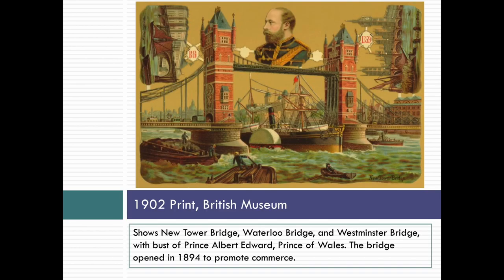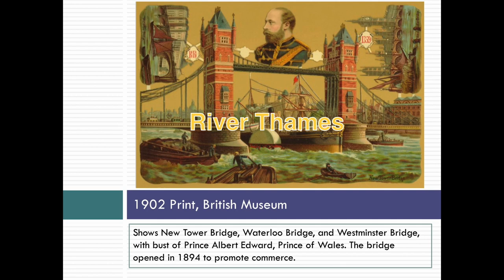Here, from a print in 1902, it shows the Tower Bridge, Waterloo Bridge, and Westminster Bridge — three bridges across the River Thames (pronounced 'Temz'). The bridges were opened in 1894 to promote commerce because they were tall enough, or could be raised, so that merchant vessels could sail up and down the Thames. Shopkeepers could receive goods, and exporters could export goods up and down the river, which leads into the ocean.